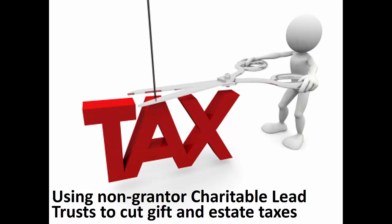This focus on excluding assets from the donor's estate is not typically a concern with standard charitable remainder trusts. If a donor receives income from a charitable remainder trust for her life, with the remainder going to charity at her death, the fact that the remaining assets go to charity means that inclusion of the assets in her estate is irrelevant — the assets come into the estate and are then exempted from taxation because they are transferred to a charity. This is not the case with a non-grantor charitable lead trust, where the assets are distributed to family members or other non-charitable beneficiaries at the termination of the trust. If any assets are included in the donor's estate — perhaps because the donor exercised too much control — then the assets are taxed in the donor's estate.